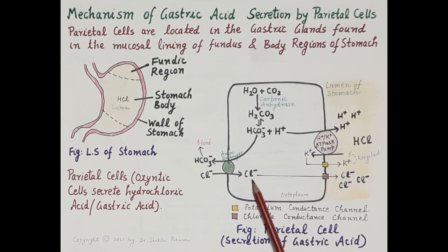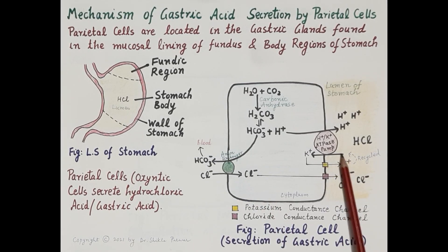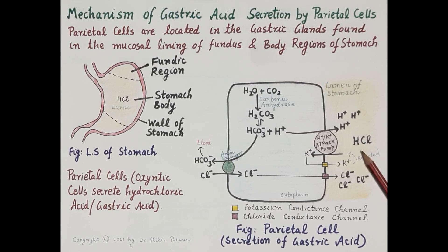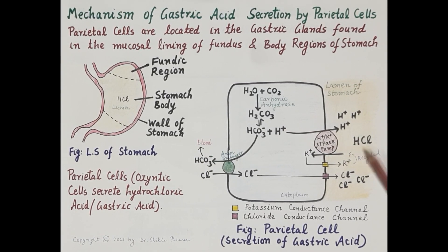The potassium and chloride ions then diffuse out of the parietal cells. Potassium ions are recycled and used by the hydrogen-potassium ATPase pump, while the chloride ions associate with the hydrogen ions to produce hydrochloric acid or gastric acid. This gastric acid is secreted into the gastric pit of the gastric glands, from where it reaches the lumen of the stomach as part of gastric juice.